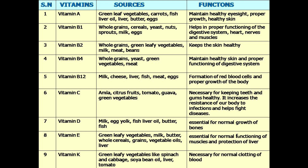Vitamin A sources are green leafy vegetables, carrots, fish liver oil, liver, butter, and eggs. Its functions are to maintain healthy eyesight, proper growth, and healthy skin. Vitamin B1 sources are whole grain cereal, yeast, nuts, sprouts, milk, and eggs. Its functions are to help in proper functioning of the digestive system, heart, nerves, and muscles.